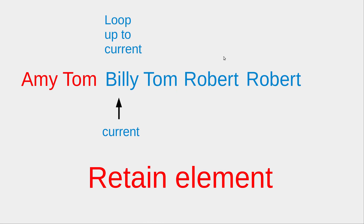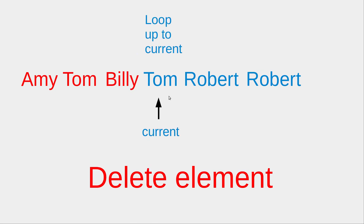After the removal, all the other upcoming elements will be moved backwards. At the same time, I would keep the index called 'current' at the same position as before. So I would do the looping again from the very first element, Amy. During this traversal, no elements are repeated, which means I would retain the element 'Beth'. When I retain the element, I would move the index 'current' to the next element.